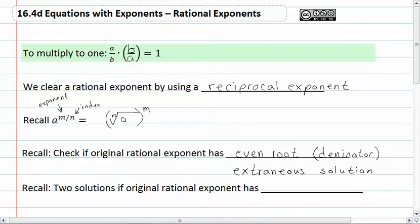You'll get two solutions if the original rational exponent has an even exponent. And here we're looking at the numerator. Remember these are the original.